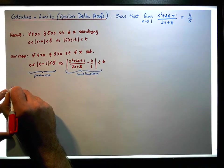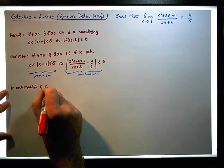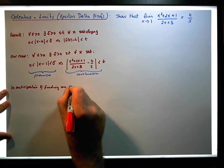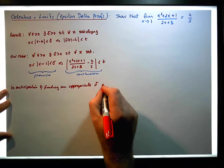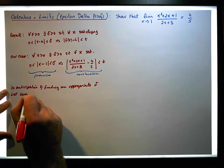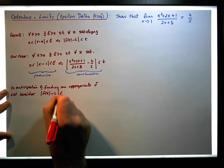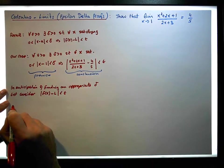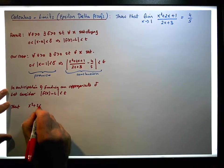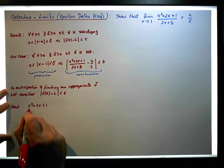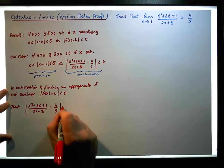In anticipation of finding an appropriate delta, let's consider the absolute value of f of x minus L less than epsilon. That is, we're going to consider the absolute value of x squared plus 2x plus 1 over 2x plus 3, minus 4 over 5, is less than epsilon. We'll do some algebra on this.